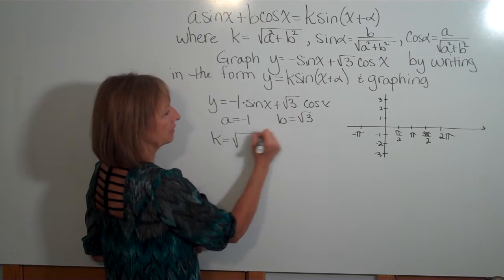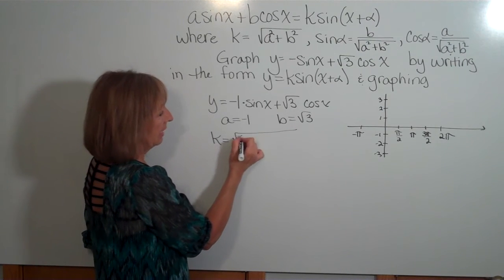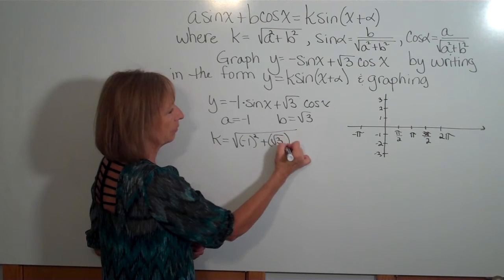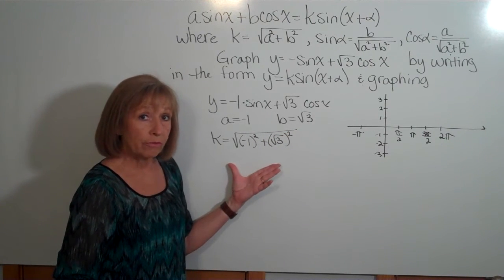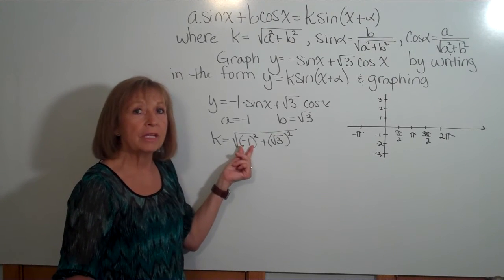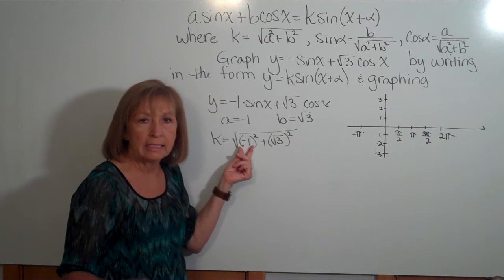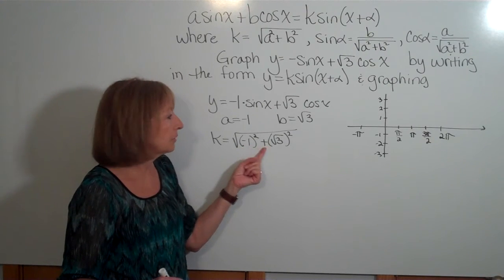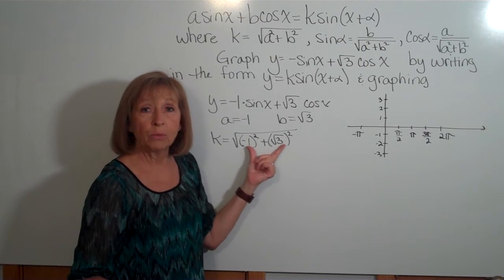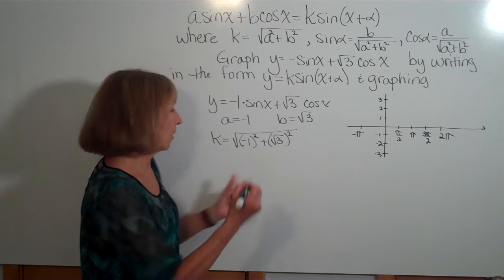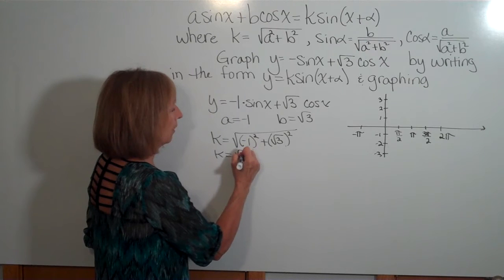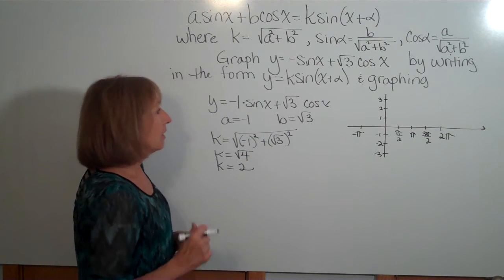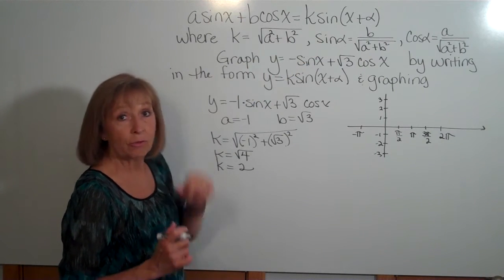So k is going to be the square root of negative one, quantity squared, plus the square root of three, quantity squared. You have to follow order of operations and be careful that it's negative one quantity squared. Negative one squared is one, plus the square root of three squared is three, and one plus three under there is four. So k is the square root of four, which gives a k value of two.